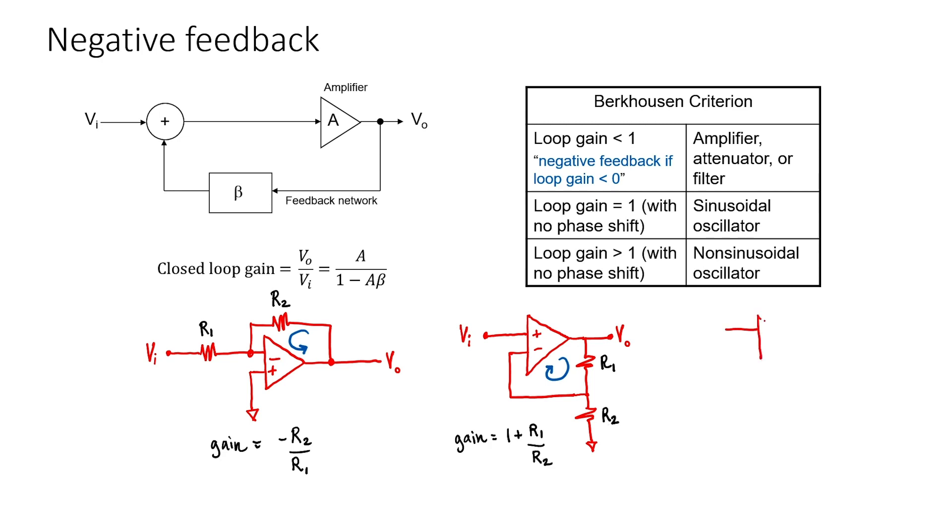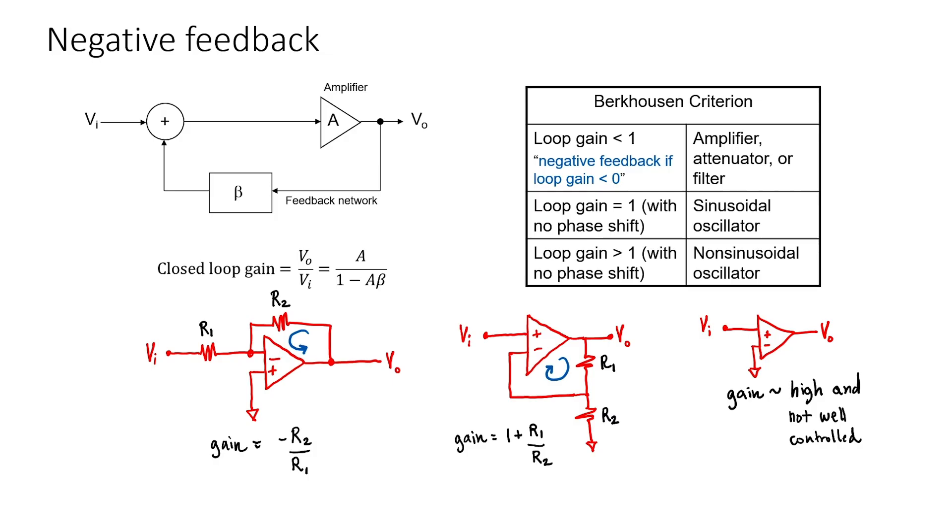This is interesting because if I were to just use a single op amp, then the gain would be very high but unpredictable. If it were an ideal op amp, the gain would be infinite. But for the op amps that we typically purchase, the gain might be 100,000, it might be 10,000, it might be 150,000, we don't know. In each of these two amplifiers, we've used negative feedback in order to stabilize the gain. We've sacrificed gain for stability.